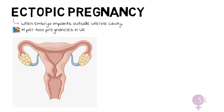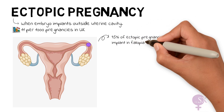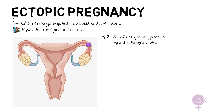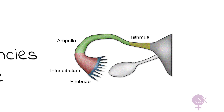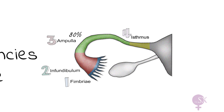An ectopic pregnancy can implant in different places. Most commonly, it will implant in the fallopian tube — in fact, 95% of ectopic pregnancies occur in the fallopian tube. The fallopian tube is divided into four main parts: the fimbrial end, the infundibulum, the ampulla, and the isthmus. And 80% of ectopic pregnancies will occur in the ampulla.